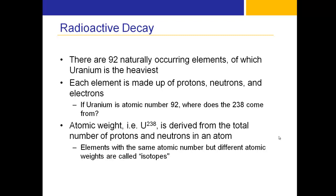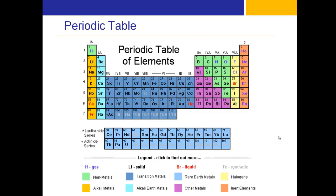For example, uranium-236 has two fewer neutrons than uranium-238. Here's a quick look at the periodic table. As you can see further down, uranium at number 92 is the heaviest naturally occurring element.